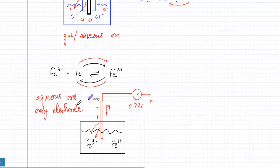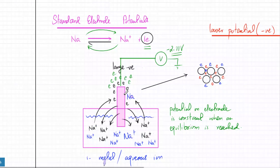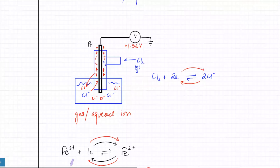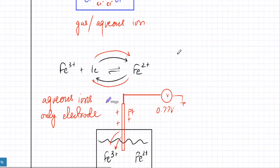So you've got three types of electrodes: either the substance is a metal — the metal itself is the electrode in equilibrium with its metal ions in solution; or you have a gas in equilibrium with its ions — the gas is in a gas jar, ions in solution, with a platinum electrode since there's no metallic substance; or you just have aqueous ions only, and again you introduce a platinum electrode. All electrodes fall into these three categories.